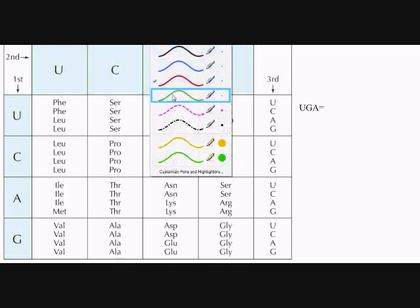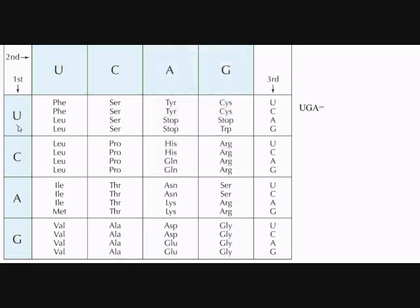So U would be down here. G would be up here. A would be over here. And you can see that when these guys come together, they form a stop. So UGA actually doesn't code for an amino acid. It codes for a stop. And that tells polymerase to stop making the amino acids.